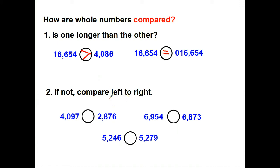So what if one's not longer than the other? Well, we simply compare left to right. Here, I've got 4,000. Here, I've got 2,000. Now in this case, I've got both numbers starting with 6,000. So if that's the case, we're going to jump back to the second number, kind of like we do when we're doing ABC order with reading. So if the first number is both 6, let's go back to the hundreds. This one has 900s. This one has 800s. This one's larger.